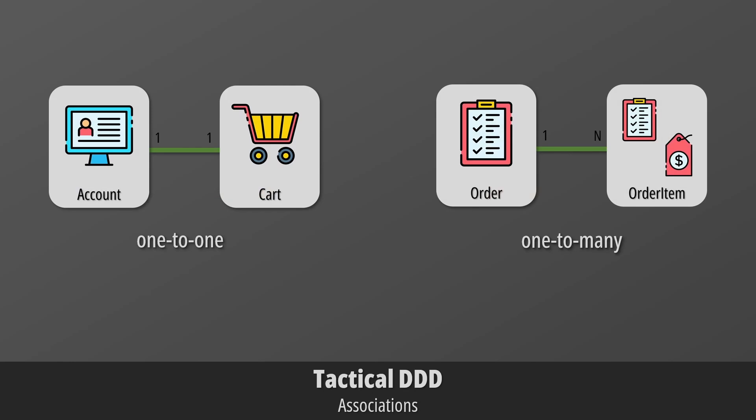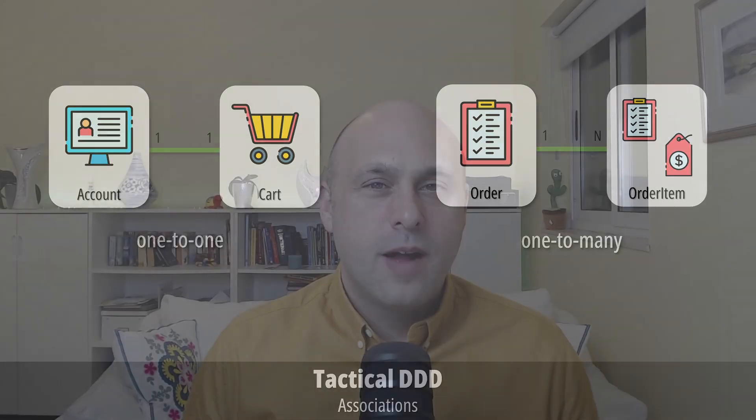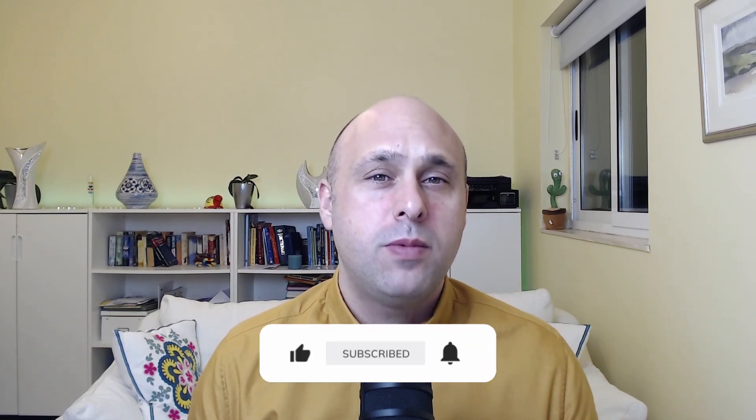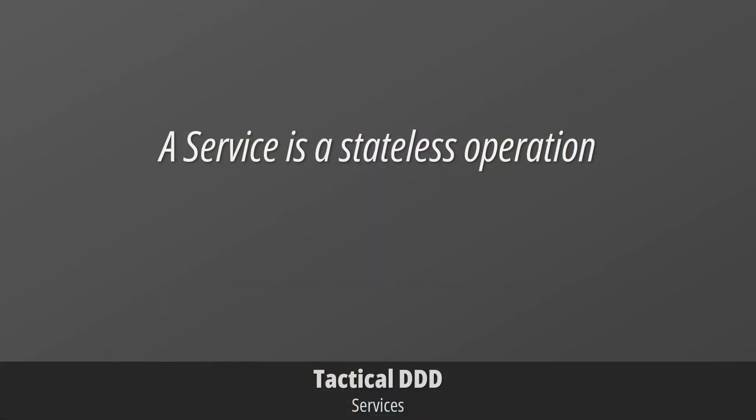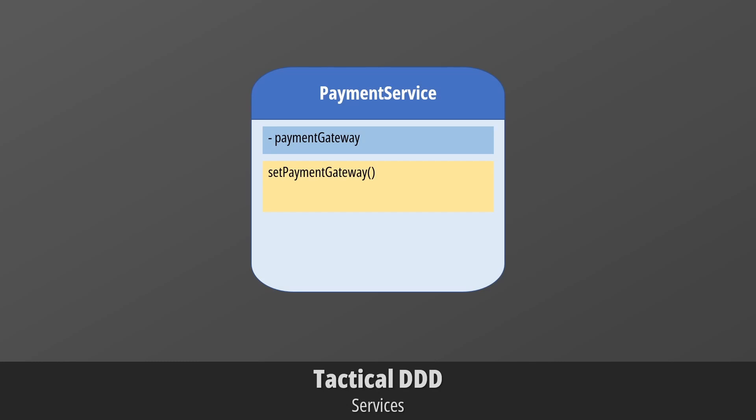Other options to simplify associations are to leverage one-to-one and one-to-many relationships. An account can be restricted to only one card, while the relationship between order and order items is a one-to-many. At times, it might be difficult to represent a concept as an entity or a value object — this is particularly true when we want to map an operation rather than someone or something. In this case, we use services. A service is a stateless operation whose interface is defined by other elements of the model, and it stands alone with no associations.